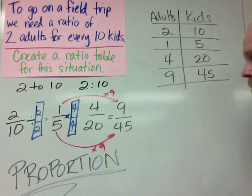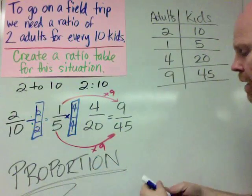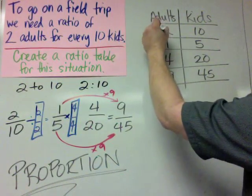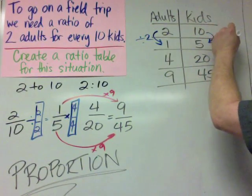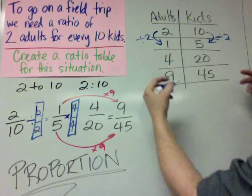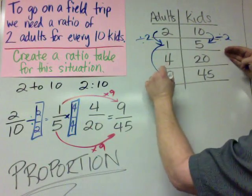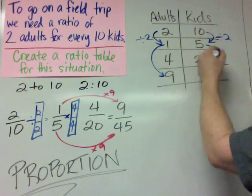And we can see all of the same patterns over here. We can see that to go from 2 down to here, you divide by 2. And that's how we get 1 to 5. We can see that going from 1 to 9 and 5 to 45.